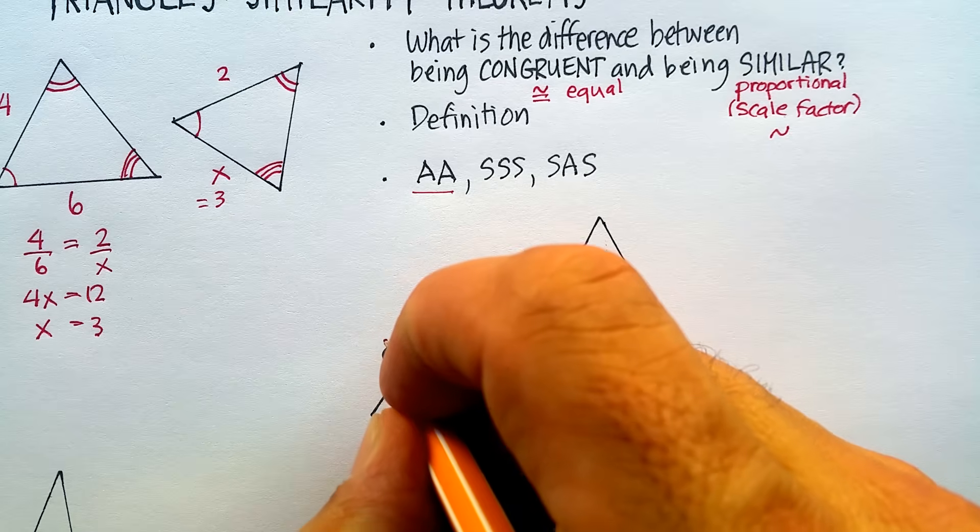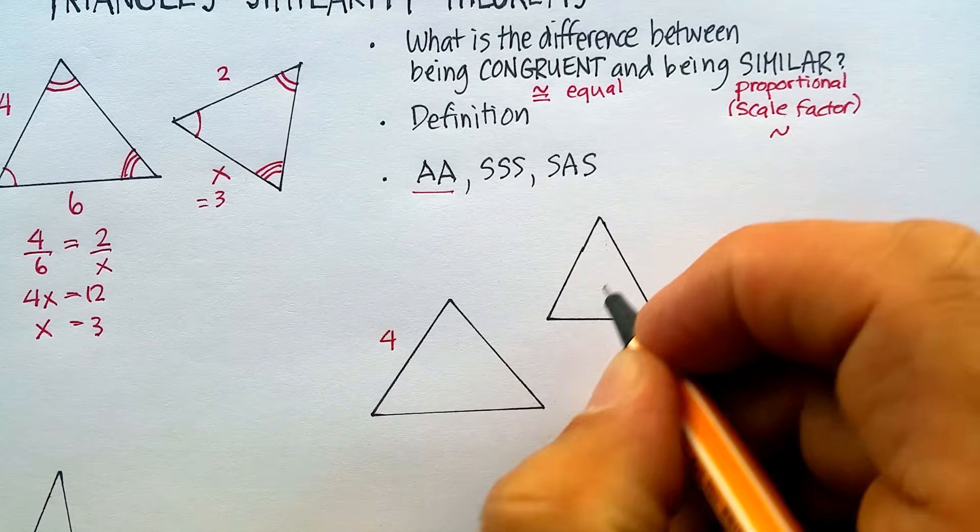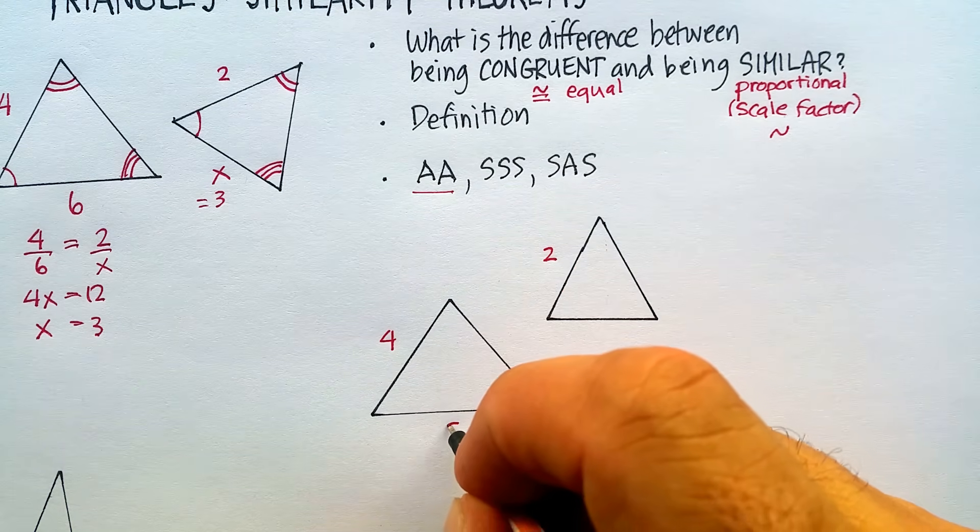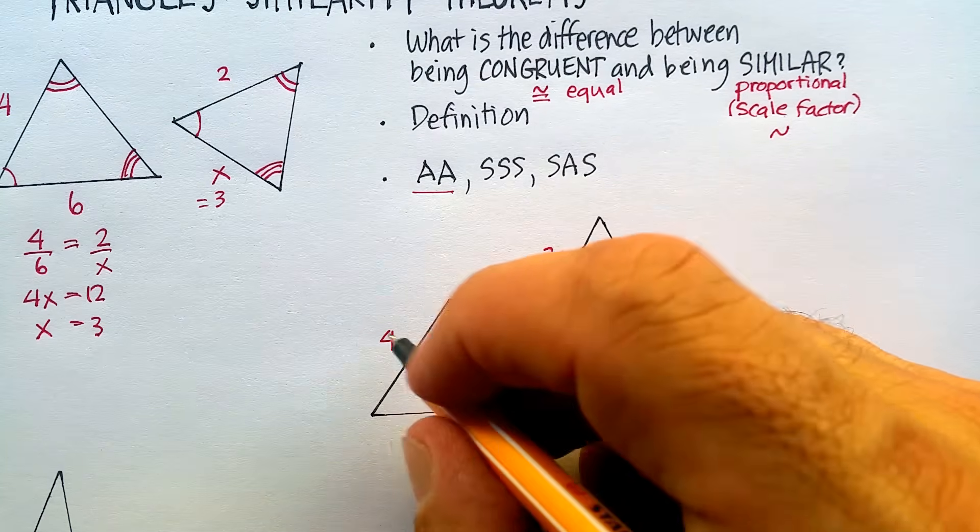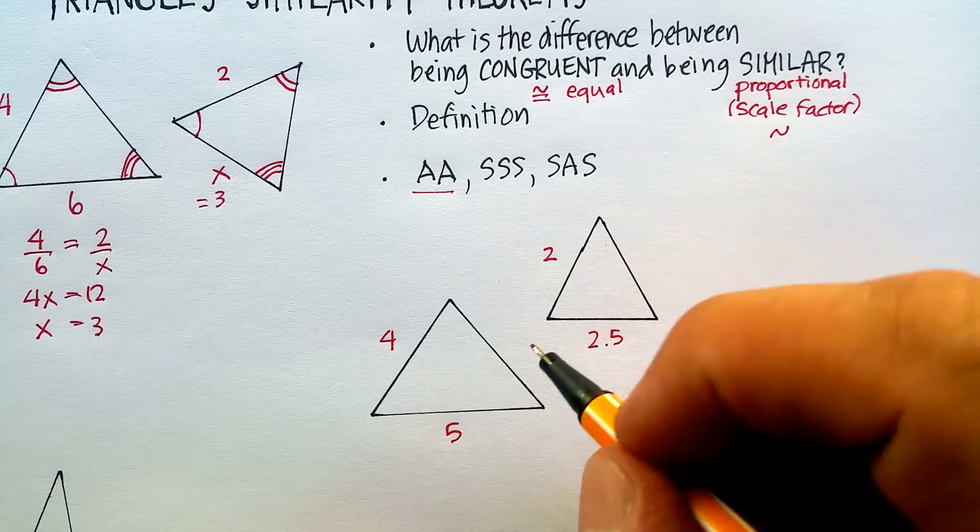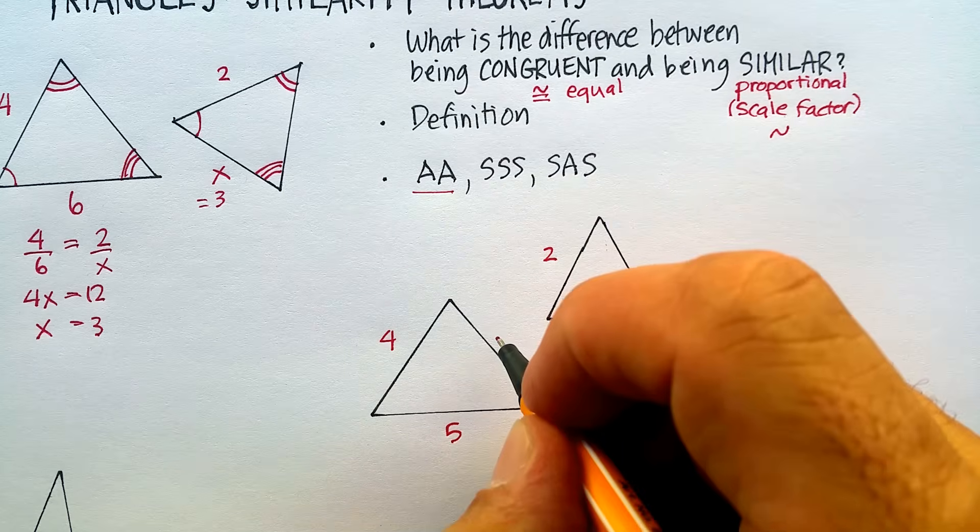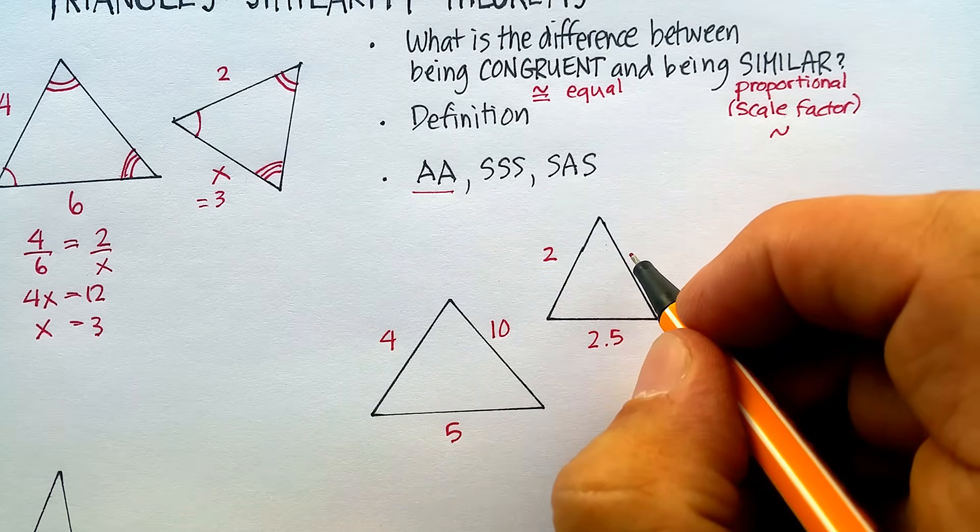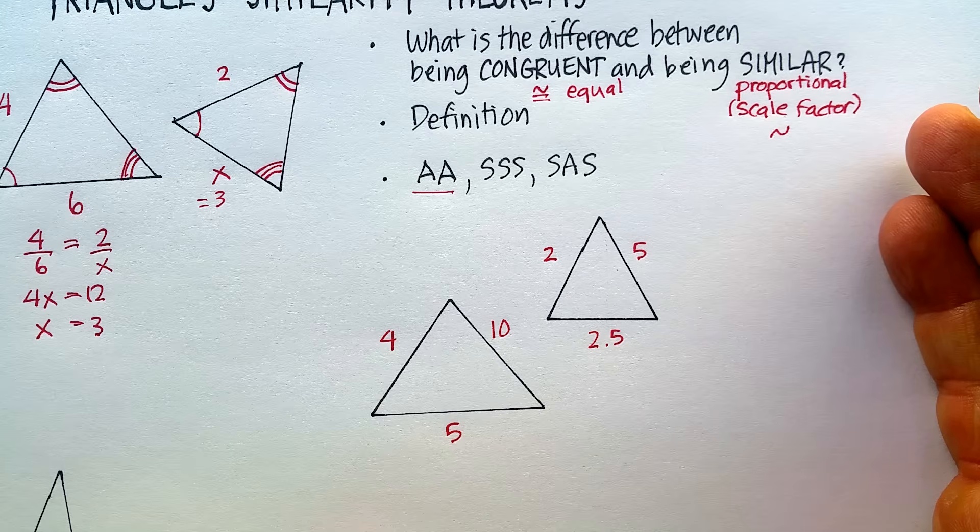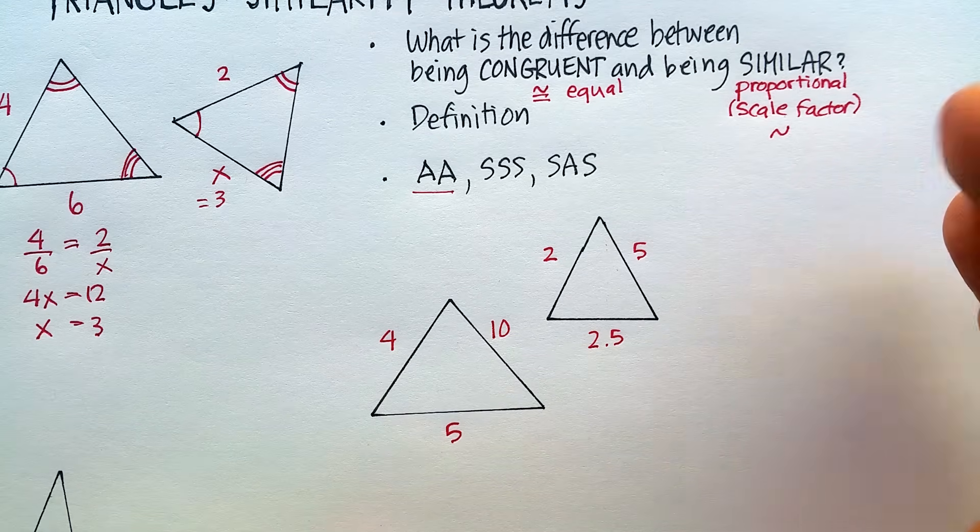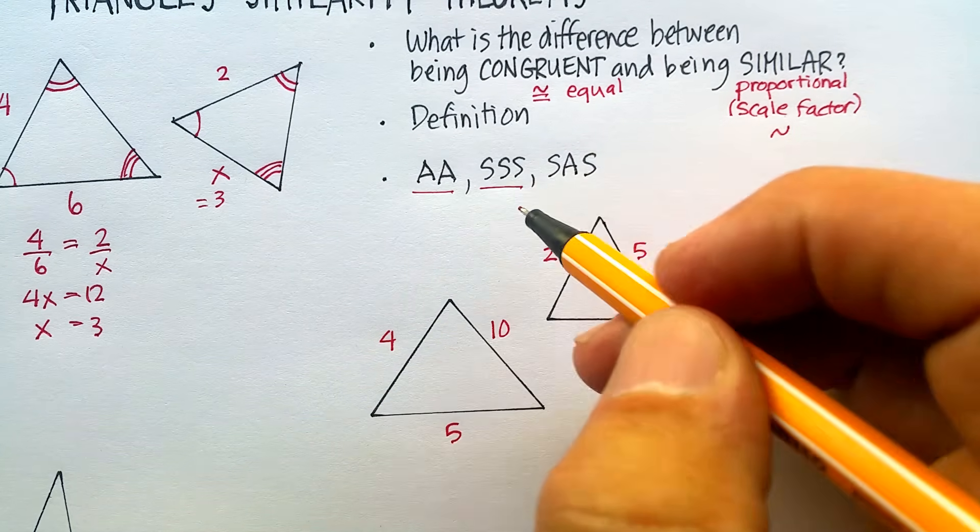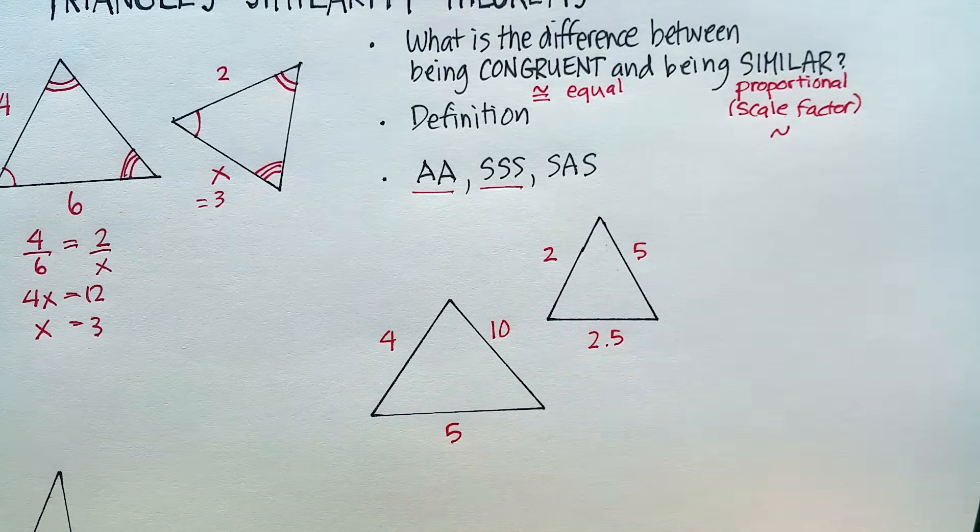So for example, if I know that this side is, let's say this is 4, this is the corresponding side here, let's say it's 2, and if I know this side is 5, I know this side would actually be 2.5. And then the same thing with this side here, if this side were 10, this side would be 5. Then these two triangles are proportional, or they would be similar. And I would be able to find what the missing angles are by doing that. And that's the side-side-side similarity theorem.